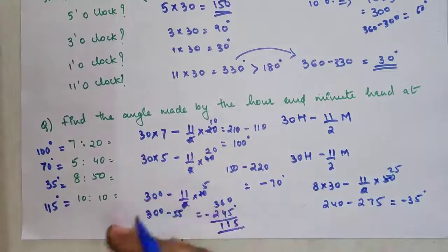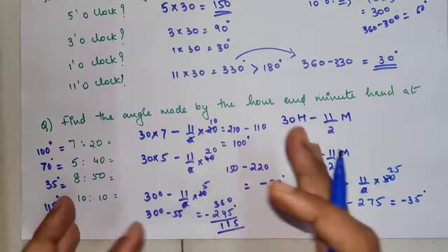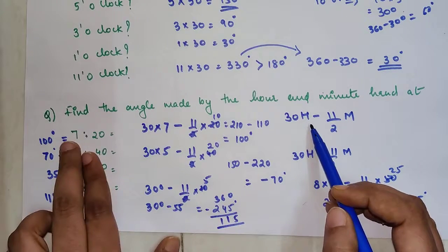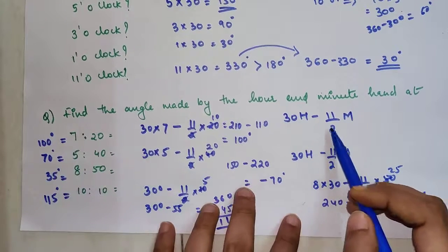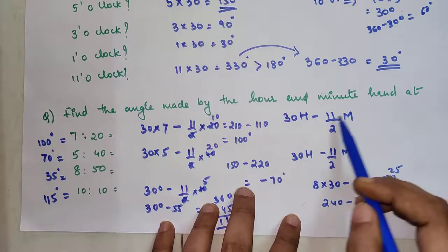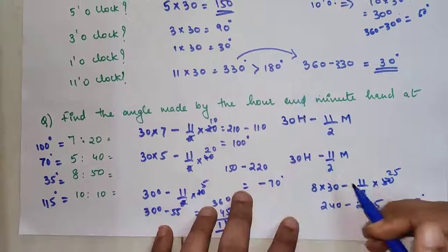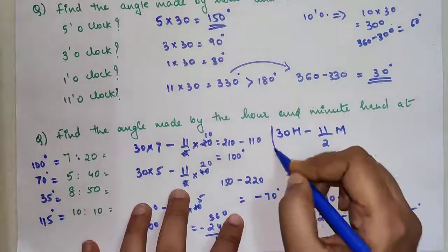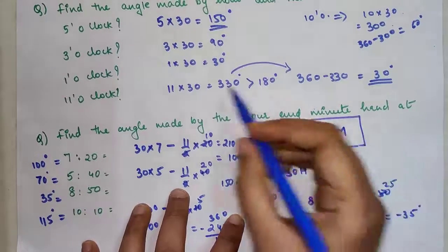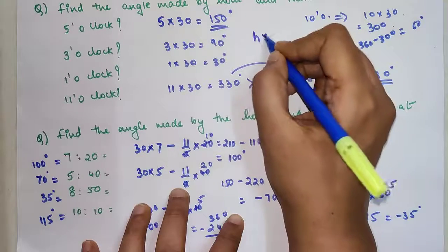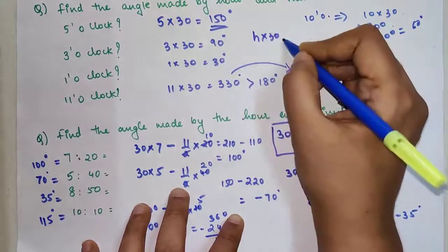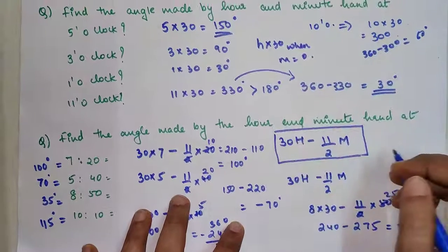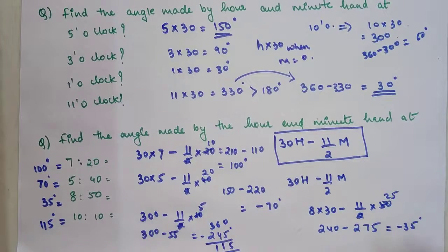Now when it happens that they have given you the minutes value, then in that case what you do is just multiply 30 with the hours value given and subtract that by 11 by 2 and multiply the minutes value given in your question. So I hope this is very simple. Please remember this particular formula and just multiply your hour with 30 when minute is equal to 0.